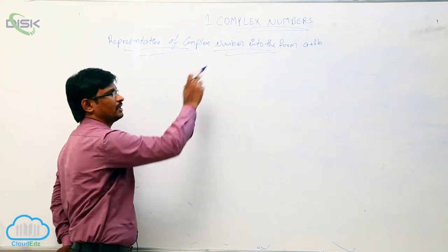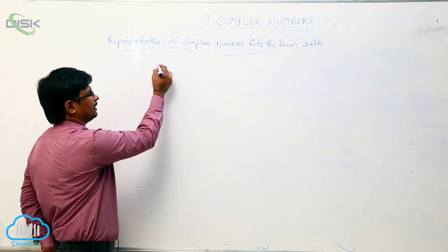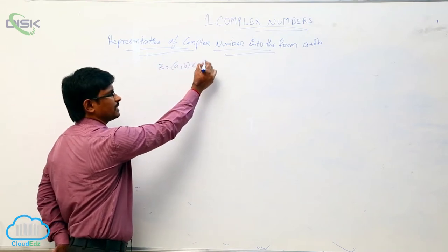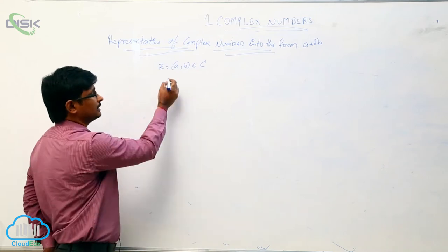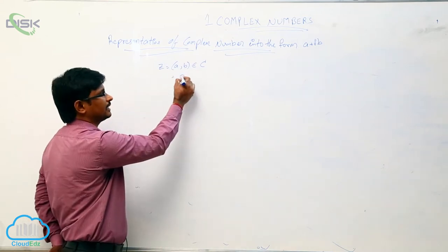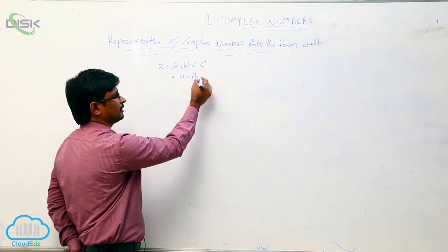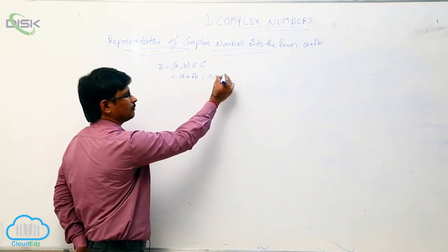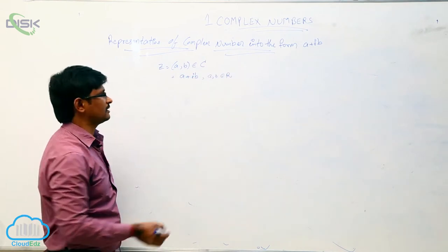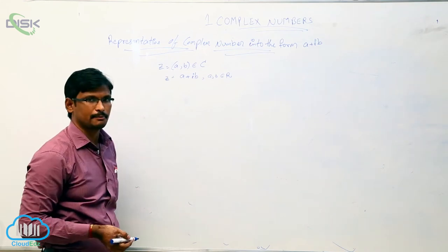We will see the topic: representation of complex numbers in the form a plus ib. Let z equal to (a, b) belong to complex numbers. We can write (a, b) as a plus ib, where a and b both belong to the real numbers. So z equals a plus ib.